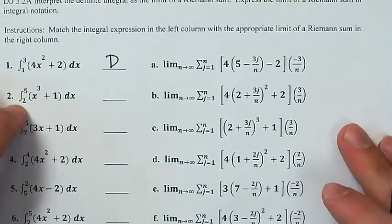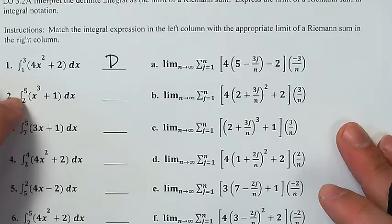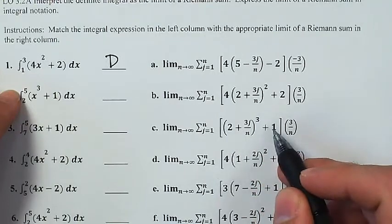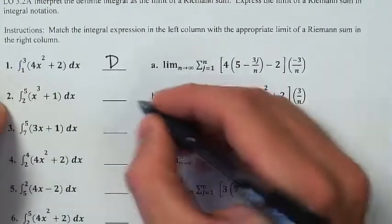Number 2, the integral from 2 to 5 of x³ + 1. So I'm looking for x³ + 1, starting at 2 with a width of 3. That's this one right here, x³ + 1, width of 3, starting x value of 2. So that's going to be c.